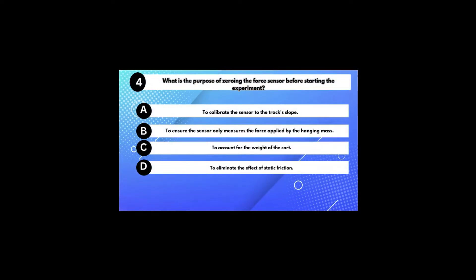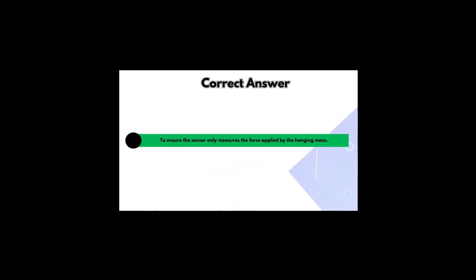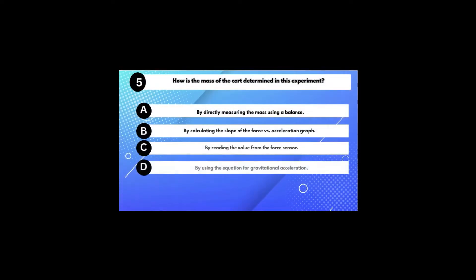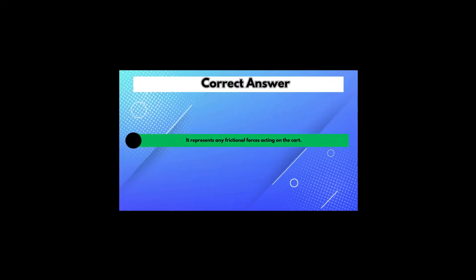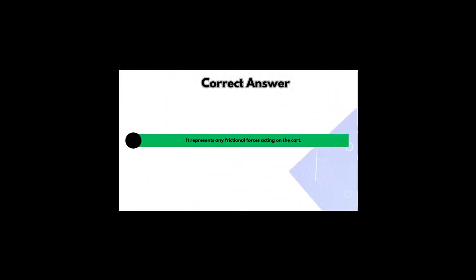What is the purpose of zeroing the force sensor before starting the experiment? Answer B: To ensure the sensor only measures the force applied by the hanging mass. How is the mass of the cart determined? Answer B: By calculating the slope of the force-versus-acceleration graph. What is the significance of the vertical intercept on the force-versus-acceleration graph? Answer C: It represents any frictional forces acting on the cart.